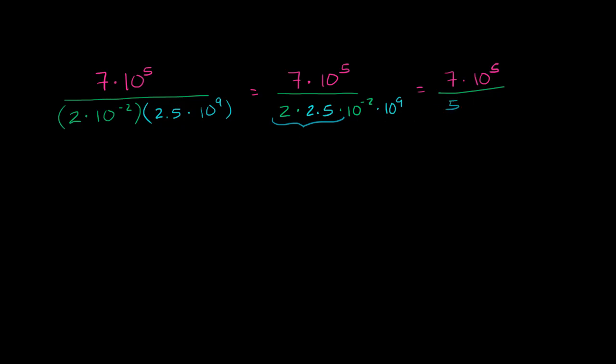And then 10 to the negative 2 times 10 to the ninth. When you multiply two numbers that are being raised to exponents and they have the exact same base, we can add the exponents. So this is going to be 10 to the 9 minus 2, or 10 to the seventh. So times 10 to the seventh.